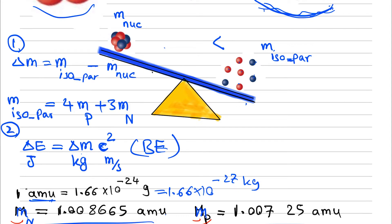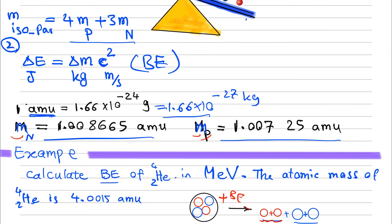Before working on a few examples, I will remind you of some unit conversions. In atomic scales, instead of kilograms, we use the atomic mass unit, or AMU. One AMU is equal to 1.66 times 10 to the power of minus 27 kilograms. We also need to know the mass of neutrons and protons. Their masses are roughly the same; however, the mass of neutrons is slightly larger than the mass of protons, as shown here by these values.